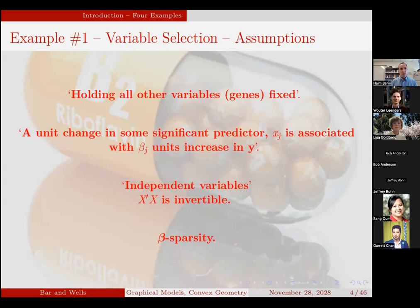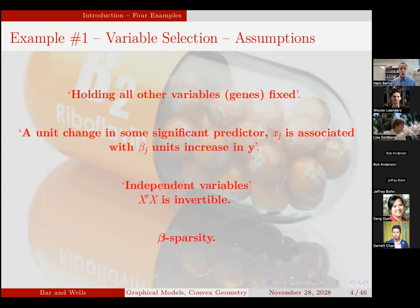There are some underlying assumptions which we challenge. One is that the regression model requires estimating coefficients while holding all other variables fixed at their mean level. Another is the interpretation that a unit change in predictor X_J is associated with beta_J units increase or decrease in Y. Another assumption is that the variables are independent — not just the subjects, but the genes — which is required for the covariance matrix to be estimable so X-transpose-X is invertible. And finally, the number of significant coefficients is assumed to be very small compared to the total number — what the literature calls beta sparsity.